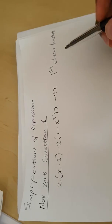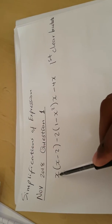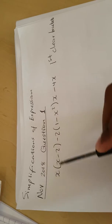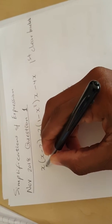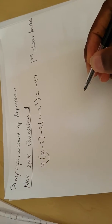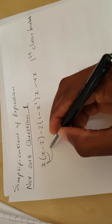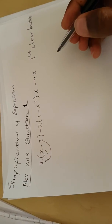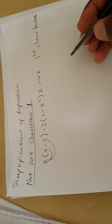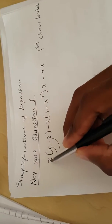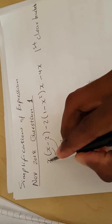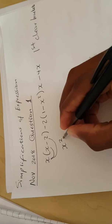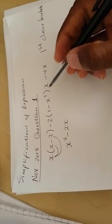To clear the brackets, we multiply the variables inside the bracket by the outside variable — separately. For instance, this outside x has to multiply this x, and the same x will also multiply negative two. So x times x gives x squared, and x times negative 2 gives negative 2x.